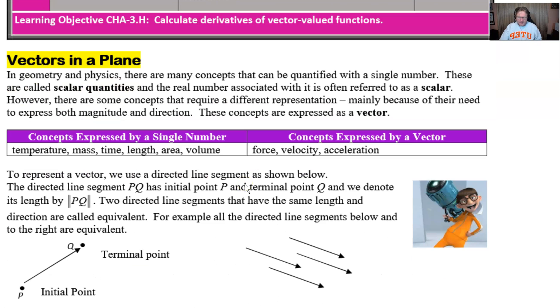So, let's take a look here, with the help of our friend, vector villain from the Despicable Me movie. To represent a vector, we're going to use a directed line segment, as shown below. The directed line segment PQ will have an initial point of P and a terminal point of Q, and will always denote its length by these very interesting brackets.